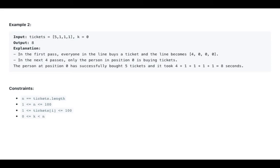Example 2: tickets is [5, 1, 1, 1, 1], k is 0. The output is 8. In the first pass, everyone in the line buys a ticket and the line becomes [4, 0, 0, 0, 0]. In the next 4 passes, only the person in position 0 is buying tickets. The person at position 0 has successfully bought 5 tickets and it took 4 plus 1 plus 1 plus 1 plus 1 plus 1 equals 8 seconds.